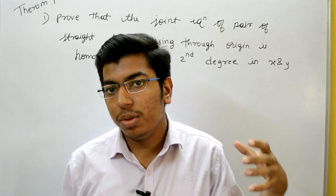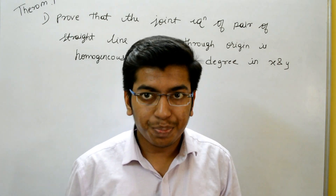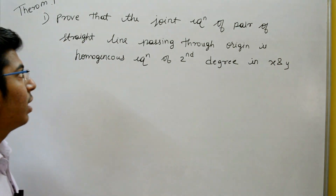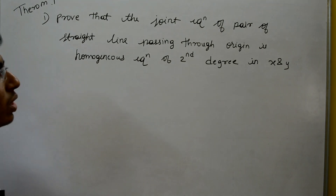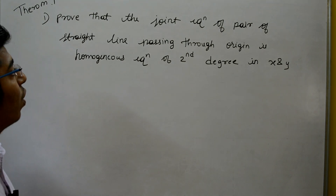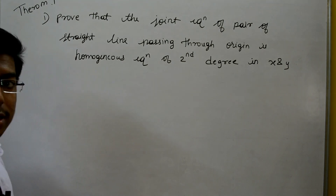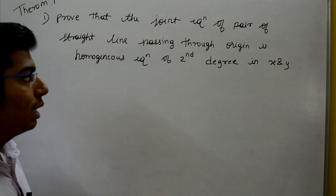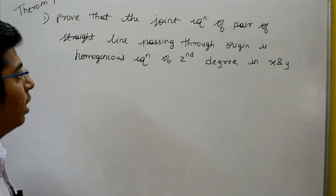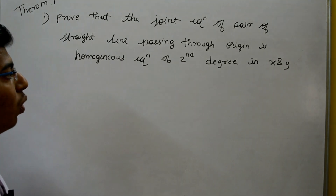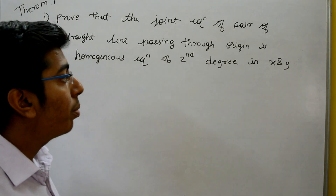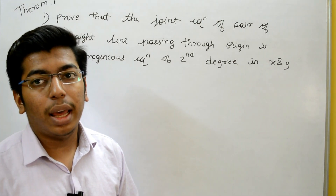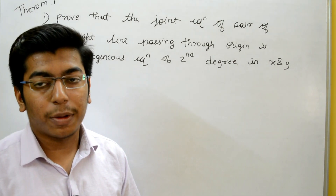The first theorem is on the board. According to the first theorem: prove that the joint equation of a pair of straight lines passing through the origin is the homogeneous equation of second degree in X and Y.